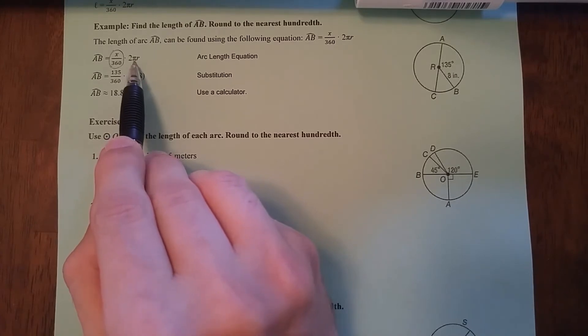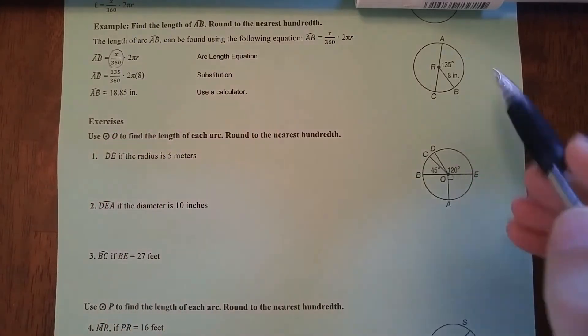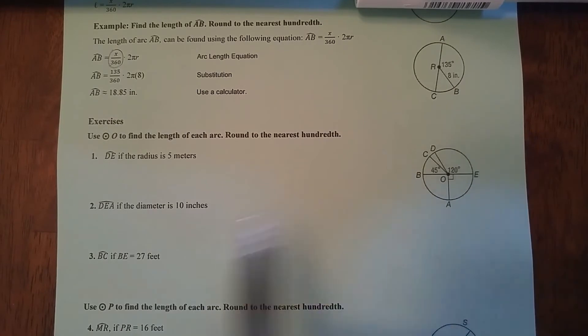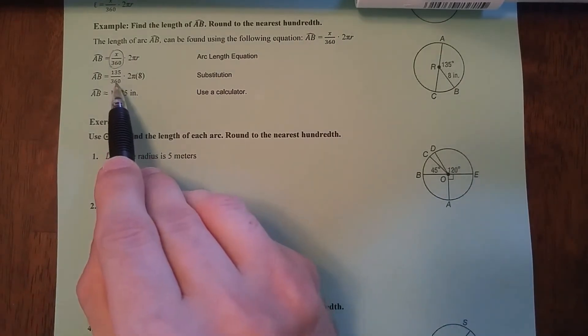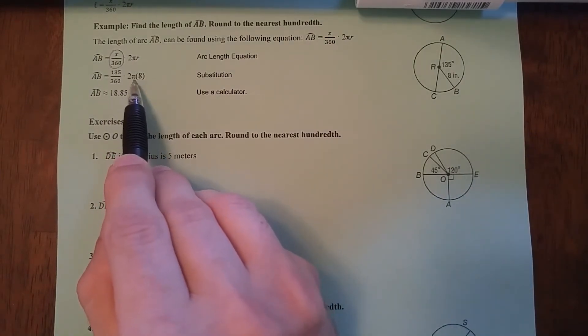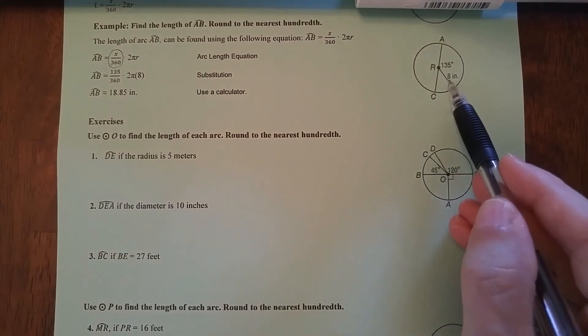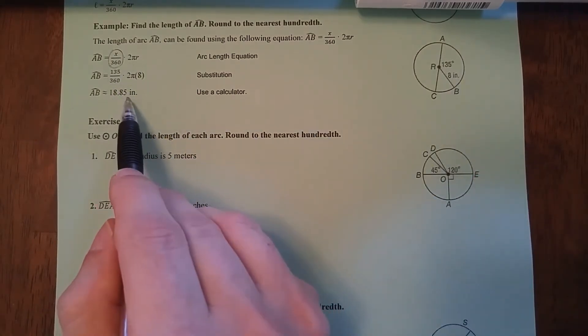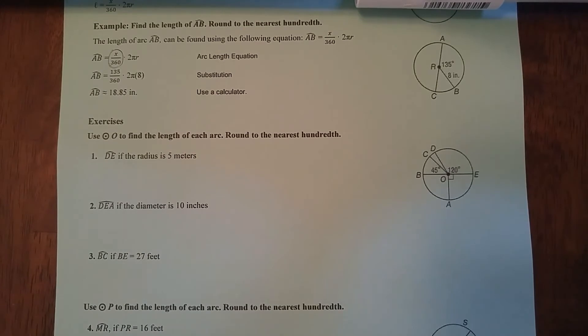What we're going to do is we're going to use this formula 2π. If you have a π button, use that. If you don't, use 3.14 times the radius. In this case, the radius is 8 inches. We fill in central angle over 360 times 2πR. And again, the radius is 8 inches. Multiply all that in your calculator and you get 18.85 rounded to the nearest hundredth.